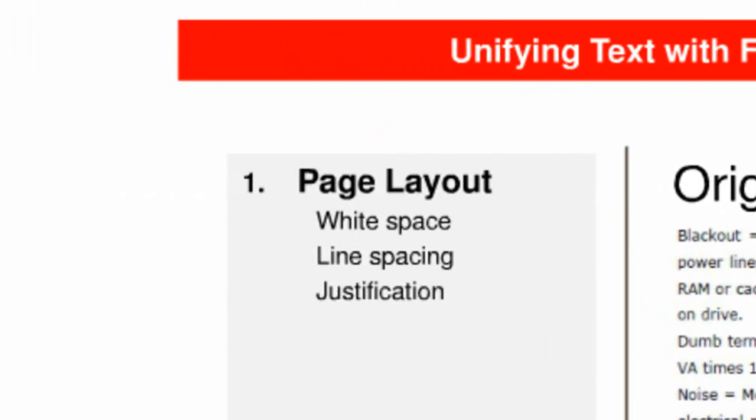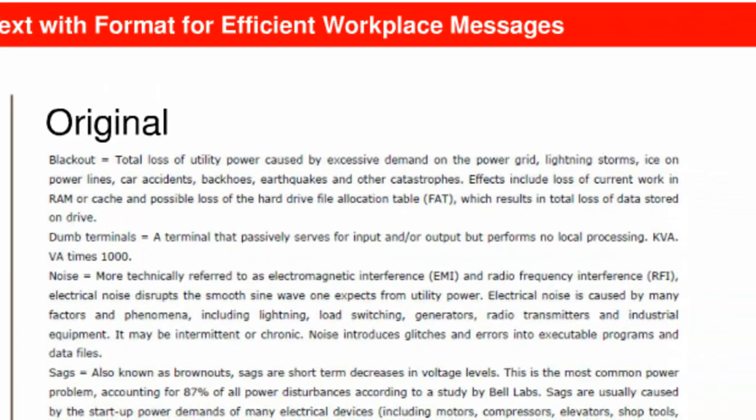The first area of formatting you need to understand we'll call page layout. I'll mention three aspects of layout: white space, line spacing, and justification. I'll demonstrate how they influence the efficiency with which readers get a written message. Take a minute and look at the passage from a page of the recommendation report. It's not important that you actually read the passage — try to ignore the words and see the shape or arrangement of black text on a white background.